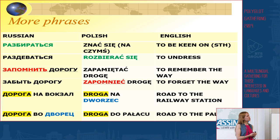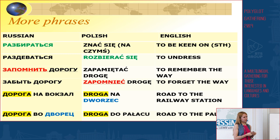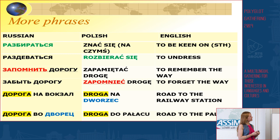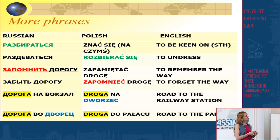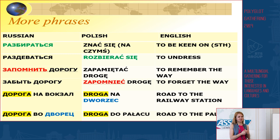There is one more interesting example. In old Russian language, there was a word meaning 'to forget,' and in modern Polish that same word means 'to remember.' So запомнить in Russian means to remember, while in Polish it means to forget; and the Polish equivalent for 'to remember' maps to the old Russian word for 'to forget.' In modern Russian we just say забыть дорогу for 'to forget the road.'